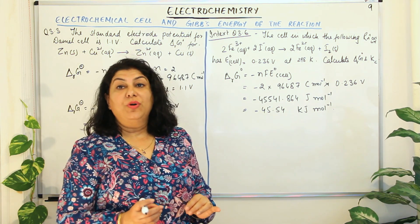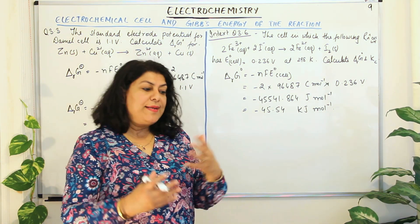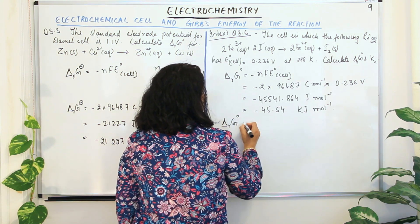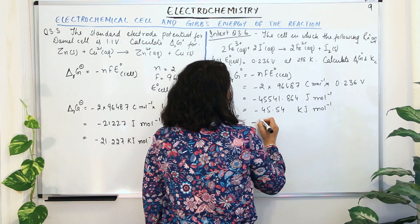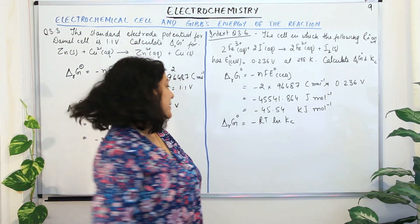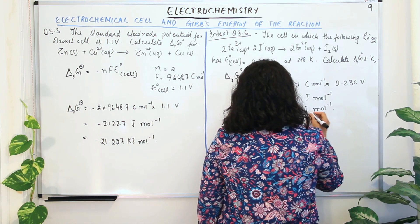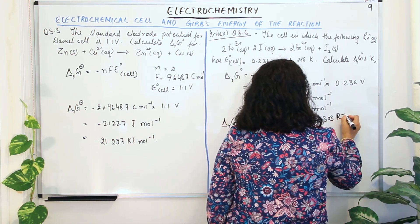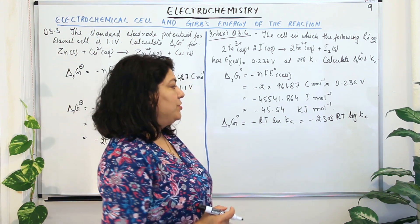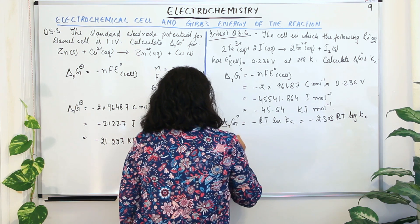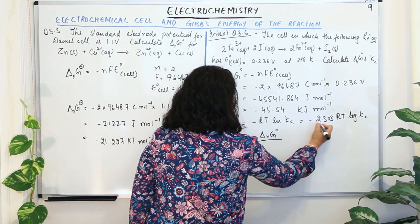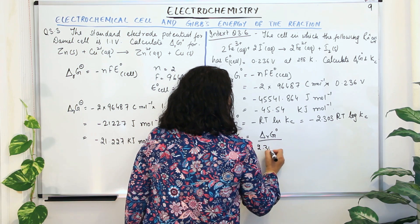Now that we have calculated ΔrG°, we need to find Kc. We know there is a relationship: ΔrG° = −RT ln Kc. To convert from natural log to log base 10, we multiply by 2.303, so ΔrG° = −2.303 RT log Kc. Rearranging, log Kc = −ΔrG° / (2.303 RT).